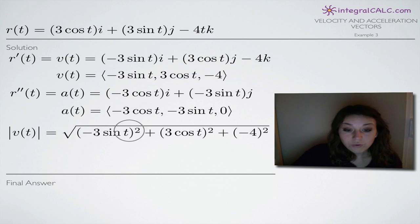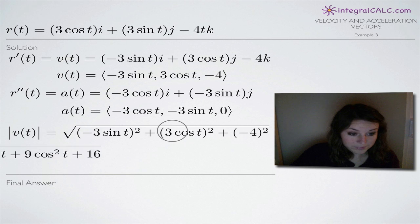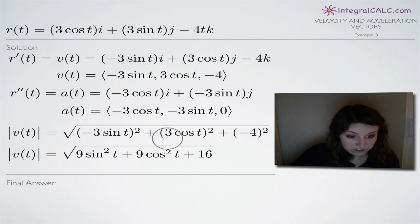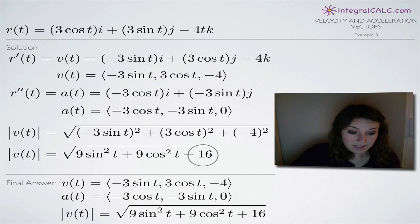So once we've done that, all we have to do is simplify as far as we can and we'll be done. So simplification is going to look like this. We'll get negative 3 times negative 3 is a positive 9 and we'll end up with sine squared of t, 9 cosine squared of t, and negative 4 squared is obviously going to give you a plus 16. And that's as far as we can really simplify this one.